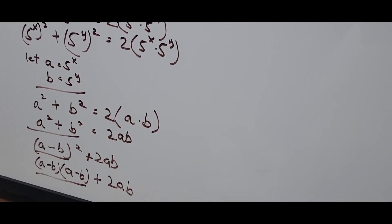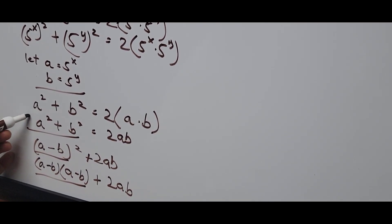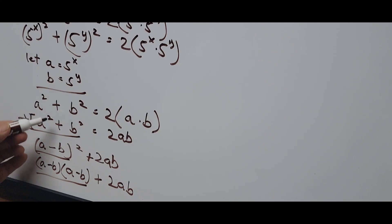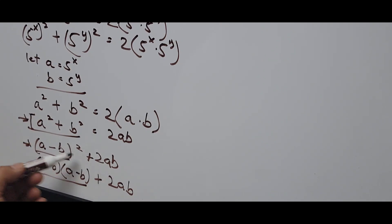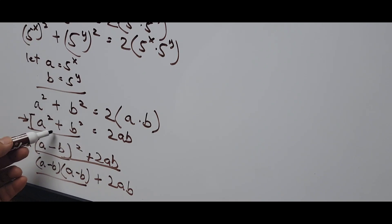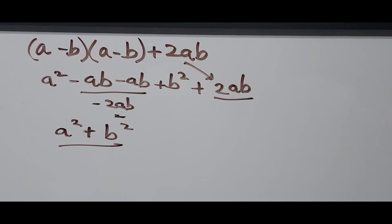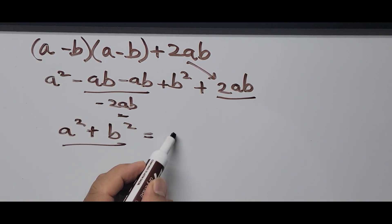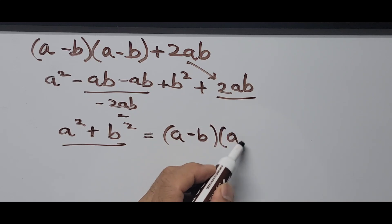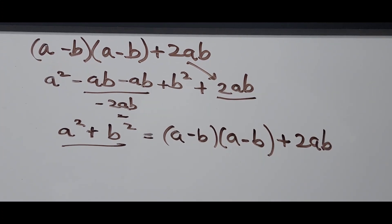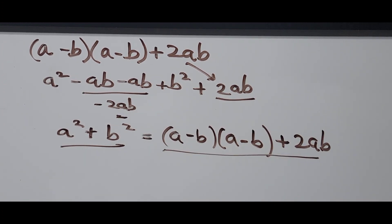So going back, a squared plus b squared in expanded form is (a minus b) times (a minus b), plus 2ab. We're going to equate this value to the earlier equation we had.